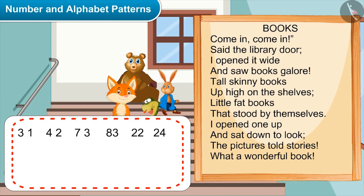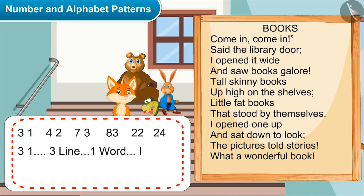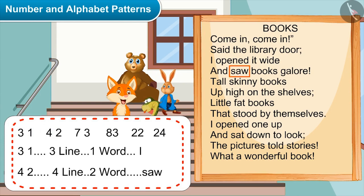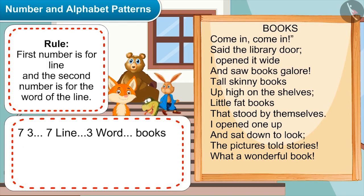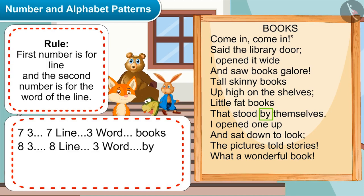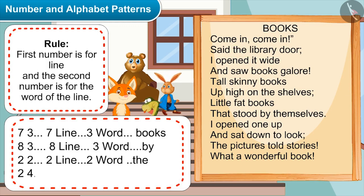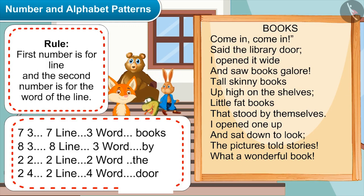Chatura, now please tell. Okay, listen carefully. First, 3,1 means third line, first word. So next, 4,2 will mean fourth line, second word. Yes, right. So the rule for this is: the first number is for the line and the second number is for the word of the line. Yes, absolutely right. So 7,3 means seventh line, third word. Next, 8,3 means eighth line, third word. Then we have 2,2 which means second line, second word. And 2,4 means second line, fourth word.